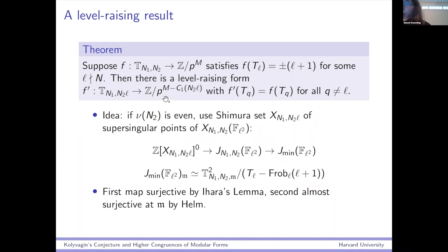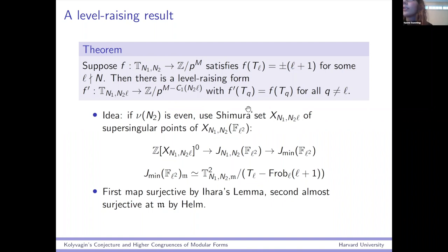How does the proof go? It depends on the parity of N_2. Let me explain the version where N_2 has an even number of prime factors — the odd version is something similar but a little different. We have a Shimura set — a double coset space for a definite quaternion algebra of level N_2 L. This is an N_2 L-new object — the Hecke algebra that acts on this is the N_2 L-new Hecke algebra. But this also has a geometric connection: this is also the set of supersingular points on the mod L Shimura curve X(N_1, N_2).